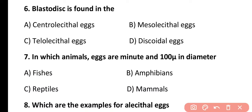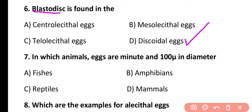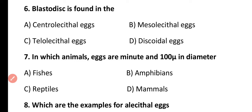Question 6. Blastodisc is found in centrolecithal eggs, mesolecithal eggs, telolecithal eggs, or discoidal eggs? The correct answer is option D. Blastodisc is a small disc-shaped structure of cytoplasm present on the yolk, and it is found in discoidal eggs, which are present in reptiles and birds.